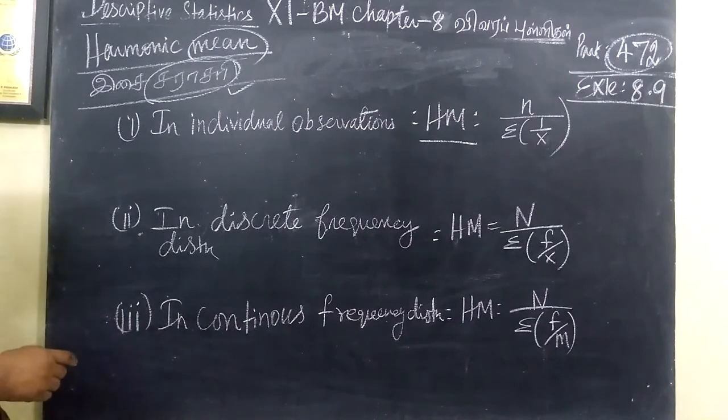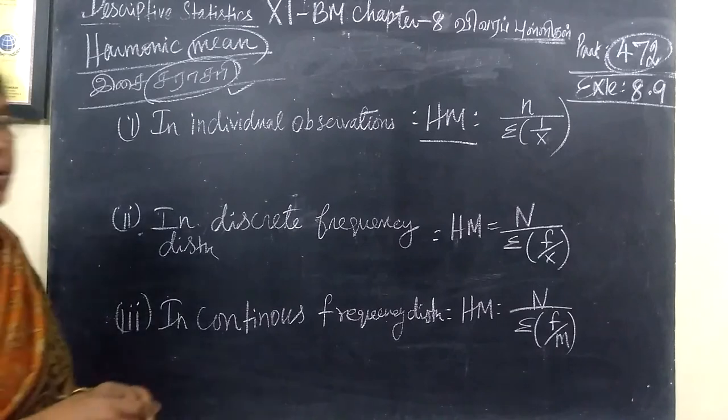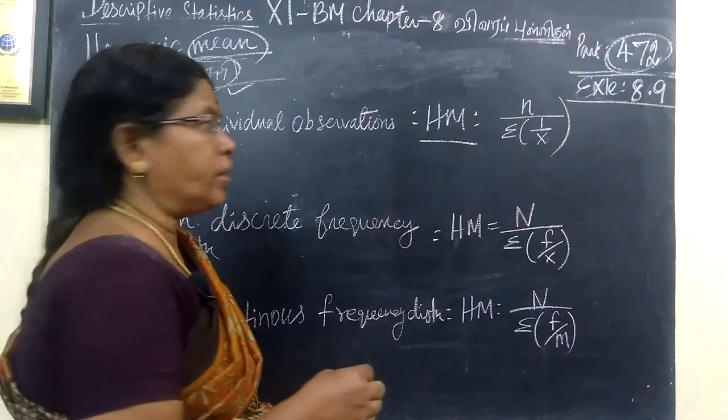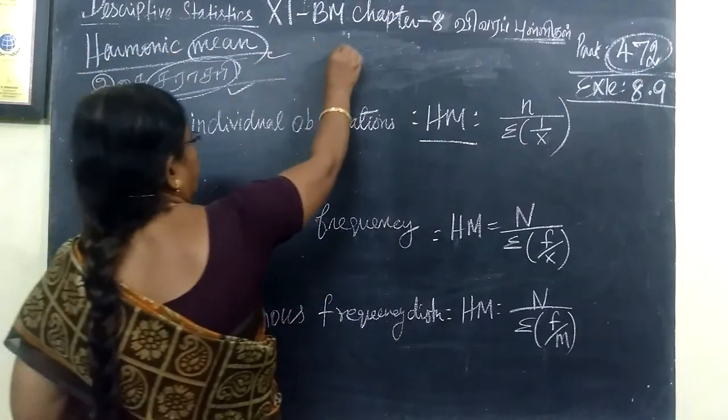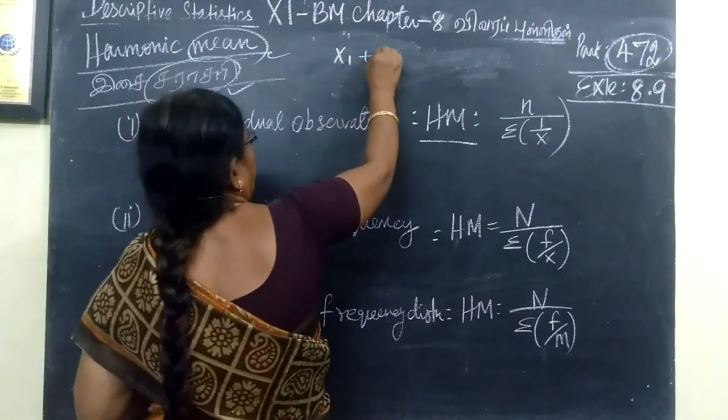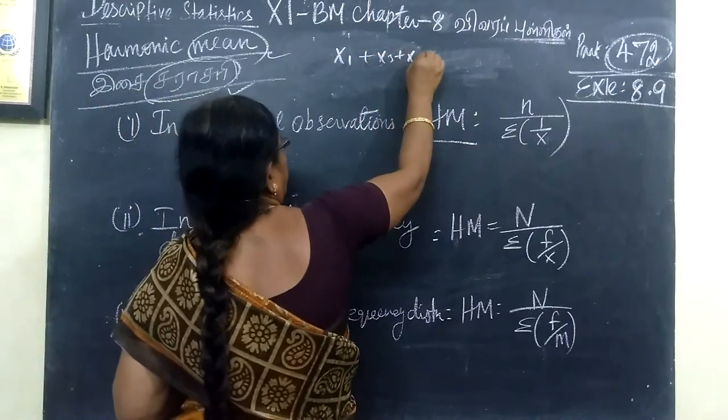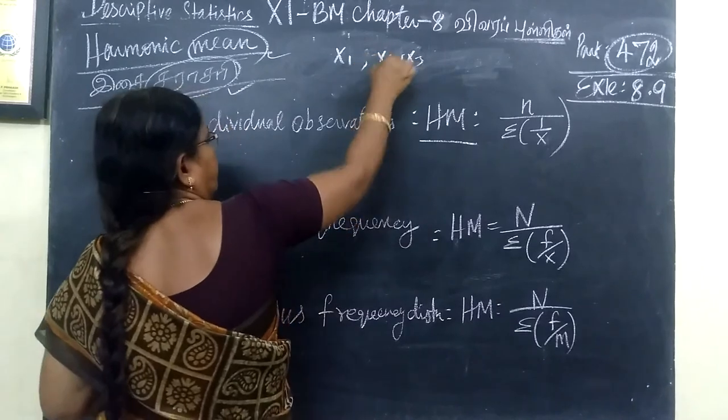So now we see harmonic mean. Suppose x1, x2, x3. This is the number of observations. There are three observations.